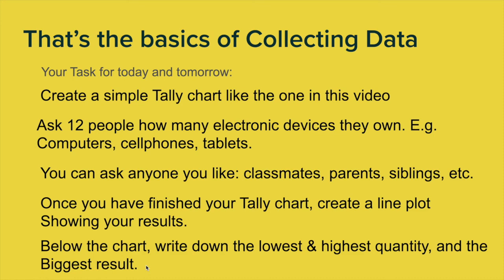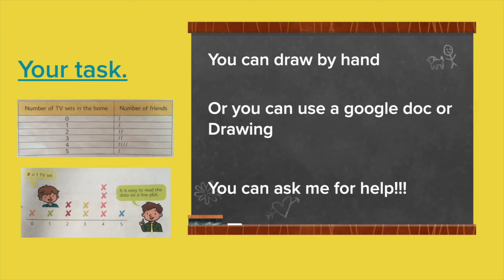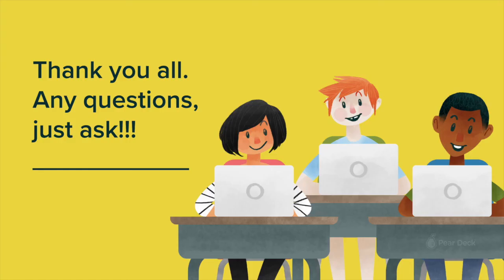Just to show you again — here's what the tally chart looks like. Draw your tally chart before you even ask the people. Once you have your 12 people, create the line plot using the same data — it's exactly the same information, just displayed as a line plot. You can draw it by hand, use a Google Doc, Google Drawing, or Word. Ask me for help anytime if you don't understand. That's it for today — speak to you later!